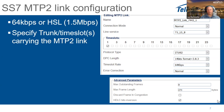Starting with MTP2 link configuration on the TDM side, you need to have your trunk or T1/E1 already configured, since you need to attach the MTP2 link to the trunk. You need to know which time slot the signal is being sent on. In most cases MTP2 links are carried on time slot 1, but it could be time slot 24 or any other. If you have multiple MTP2 links, they could be on time slots 1, 2, 3, or 4.